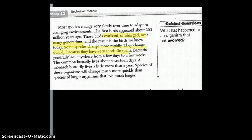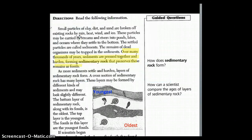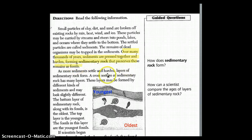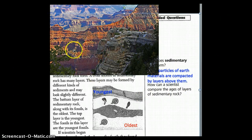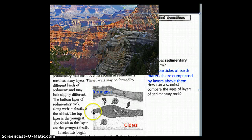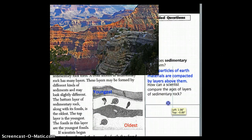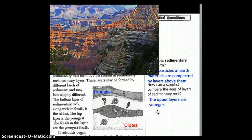The first part of this page discussed how fossils are made in different types. For the question 'How does sedimentary rock form?': over many thousands of years, sediments are pressed together and hardened, forming sedimentary rock that preserves the remains as fossils — small particles of earth materials are compacted by layers above them. For 'How can scientists compare the ages of layers of sedimentary rock?': the oldest are on the bottom, so the upper layers are younger and the bottom layers are older. There's also carbon dating, but layering alone tells us a lot.